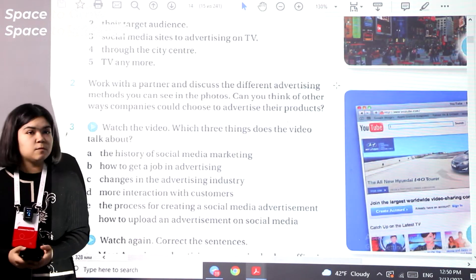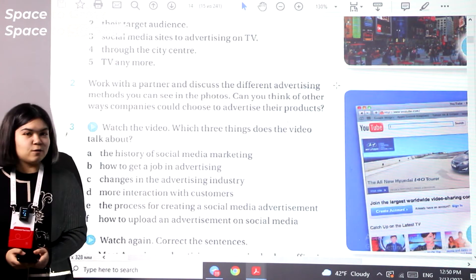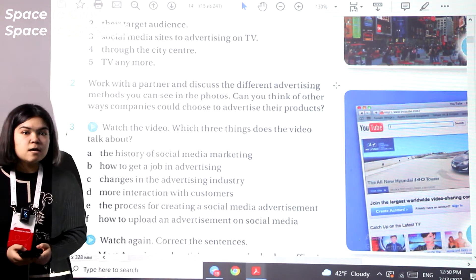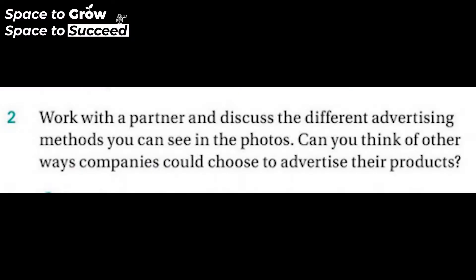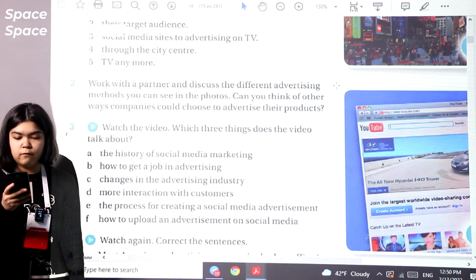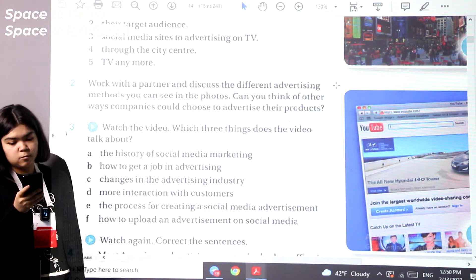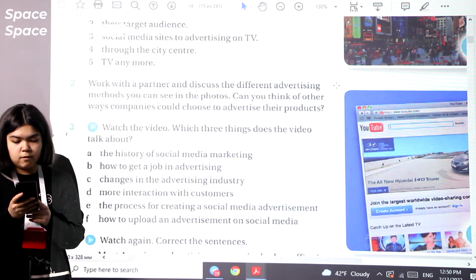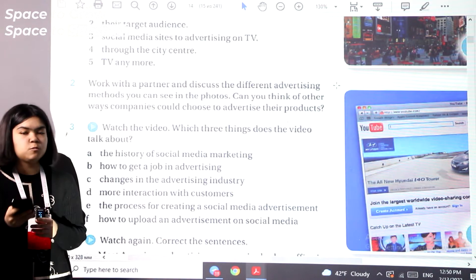Exercise 2: work with your partner and discuss the different advertising methods you can see in the photos. Can you think of other ways companies could choose to advertise their products? Take your time. A possible answer: in the photos we can see digital billboards, an internet ad, and a TV advert. Other forms of advertising include radio, newspaper, magazine ads, celebrity endorsements, and sponsorship of sporting events.